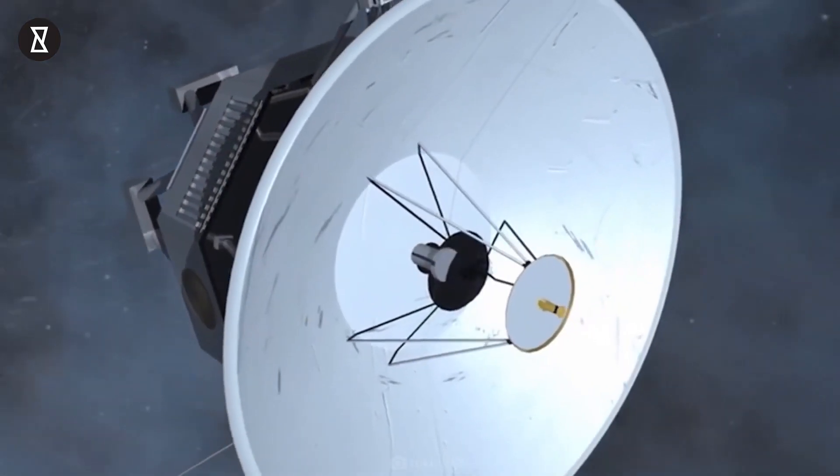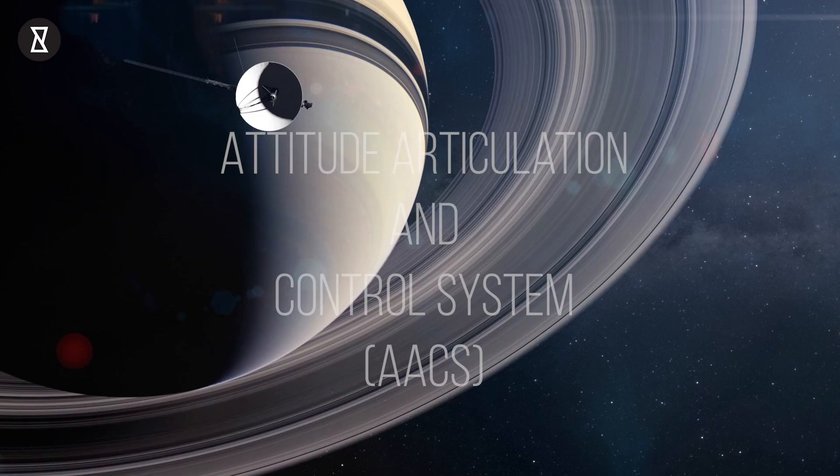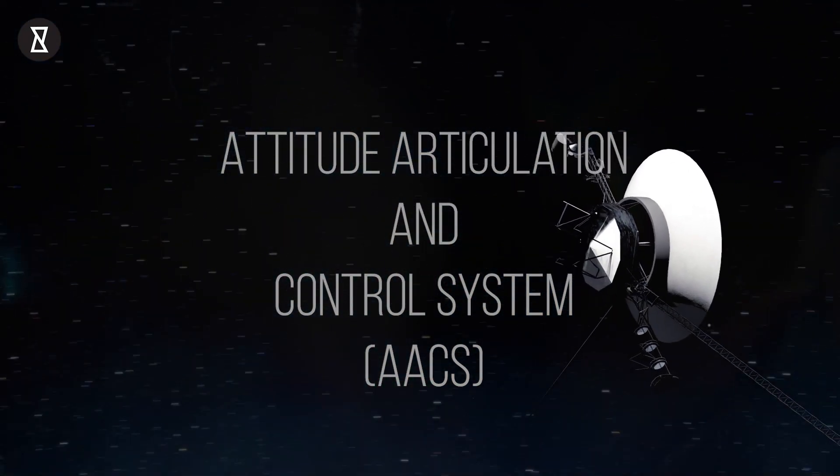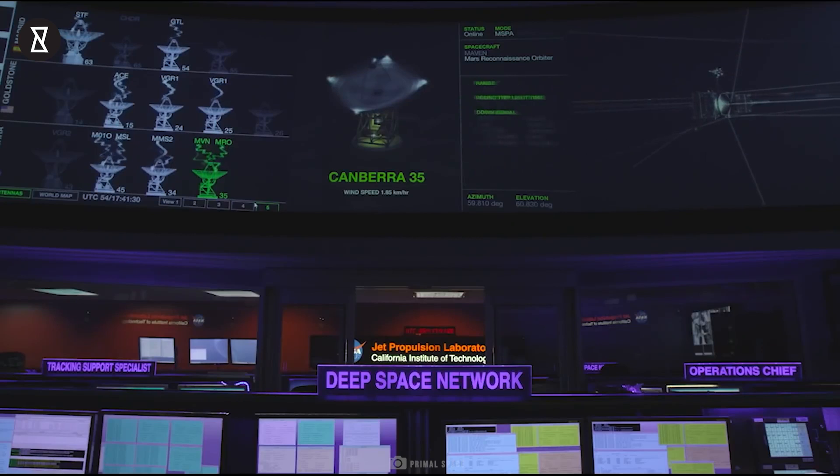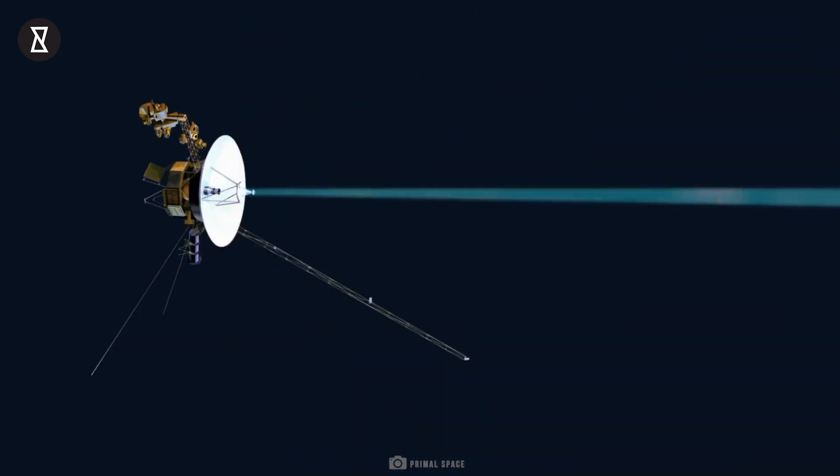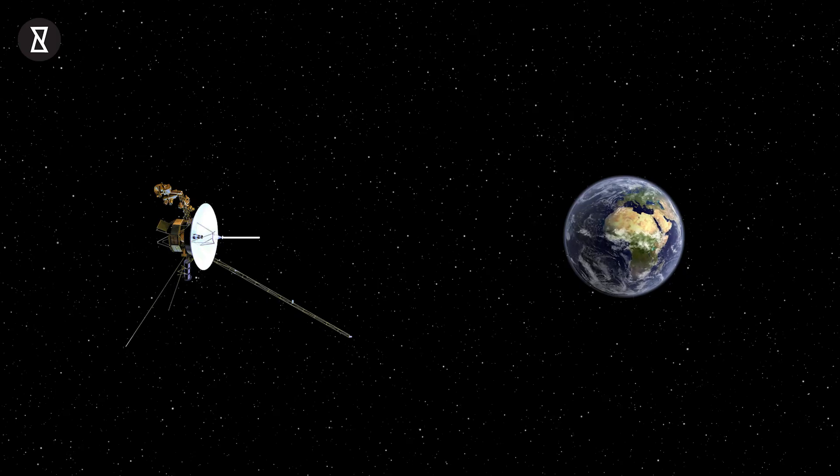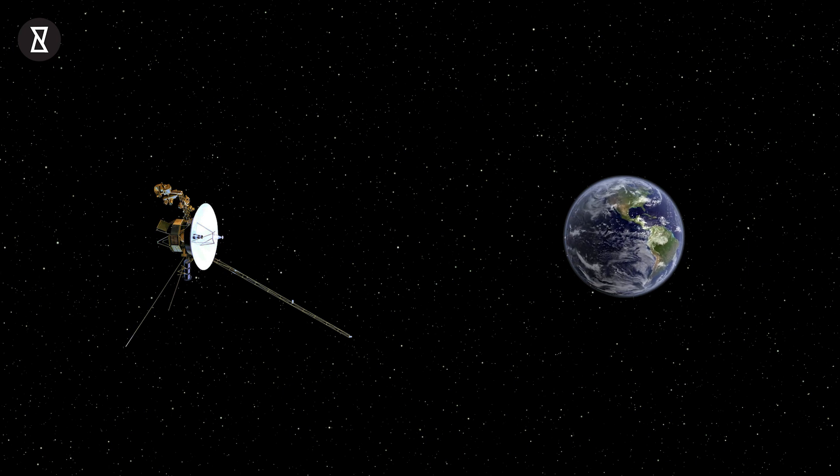In mid-May, Voyager 1's onboard system responsible for keeping its high-gain antenna pointed at Earth, known as the Attitude Articulation and Control System, or AACS, started beaming home confusing jumbles of data instead of the usual reports about the spacecraft's health and status. From our viewpoint, it appeared as if the spacecraft had developed something like an electronic version of aphasia, a condition that causes the loss of fluent speech. The data may appear to be randomly generated or does not reflect any possible state the AACS could be in, explained NASA in a statement from the time.